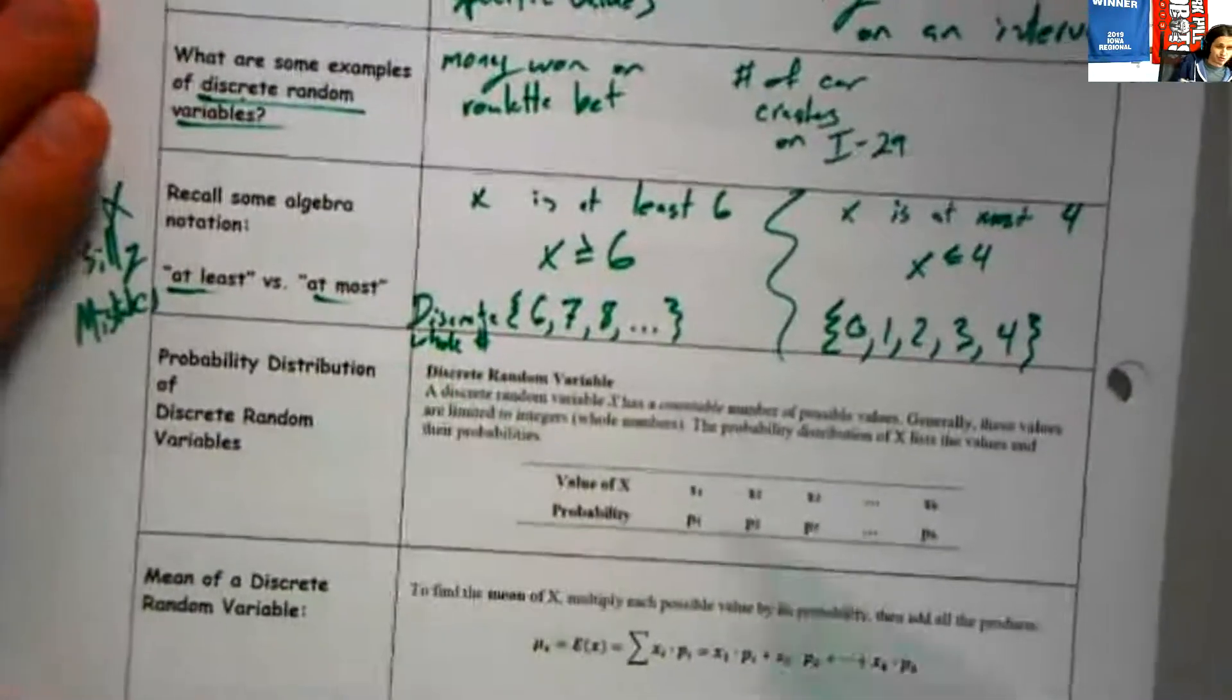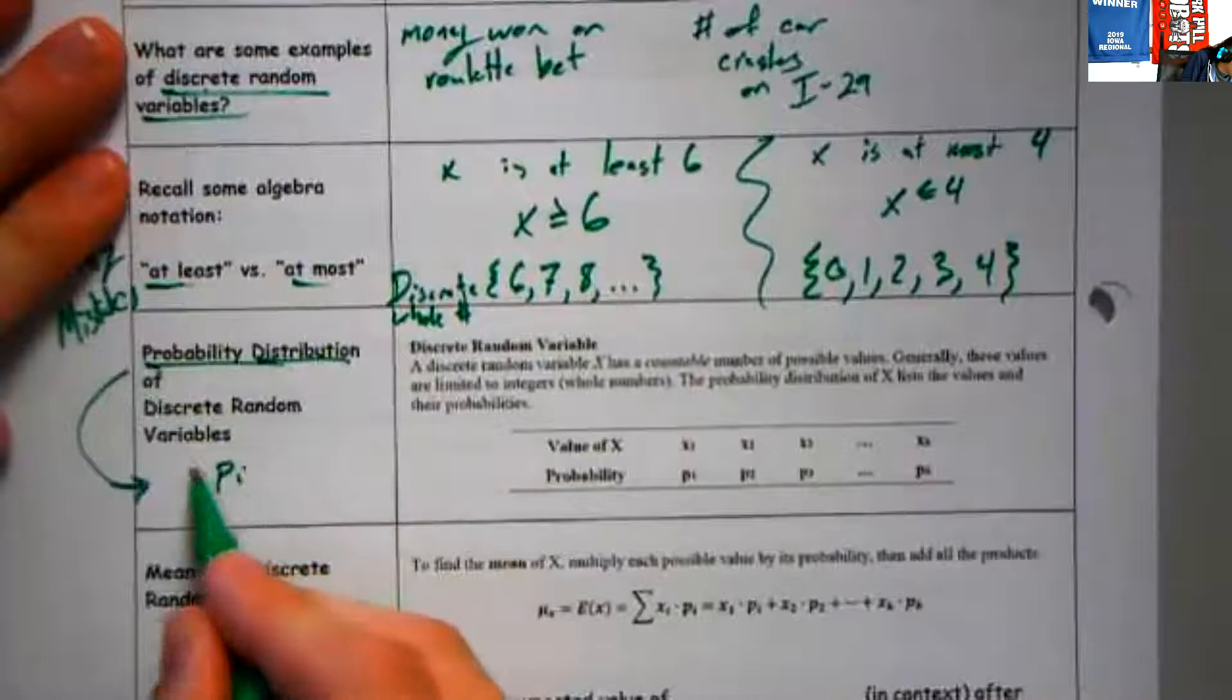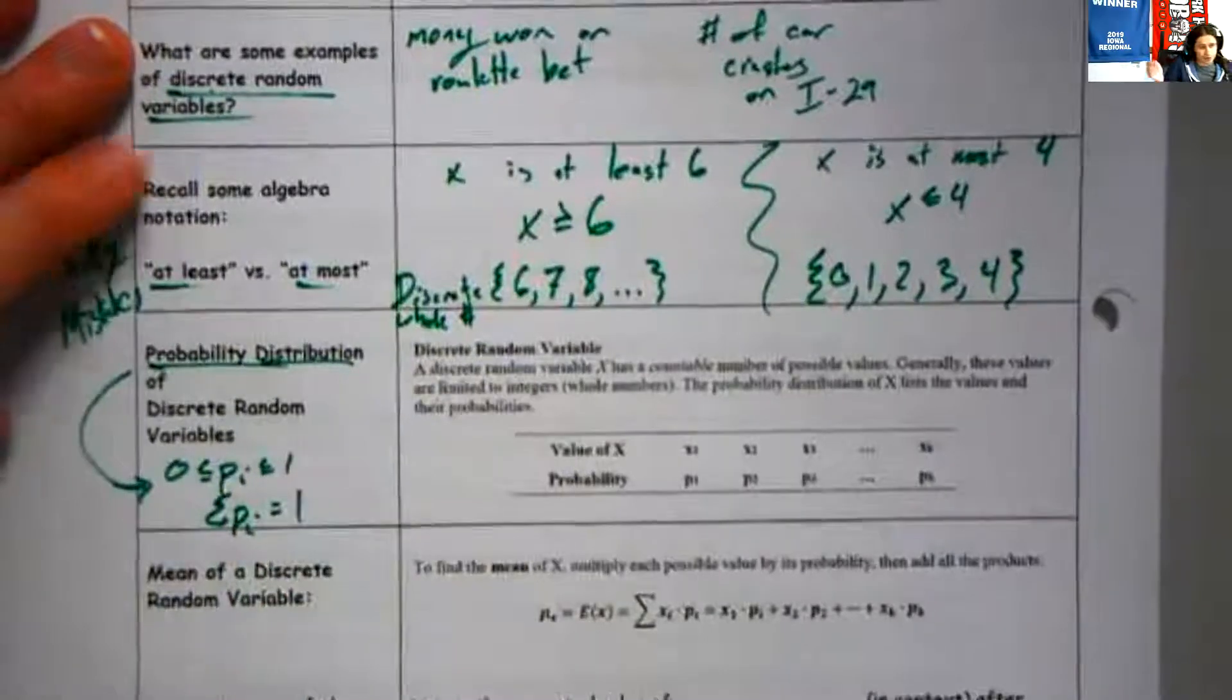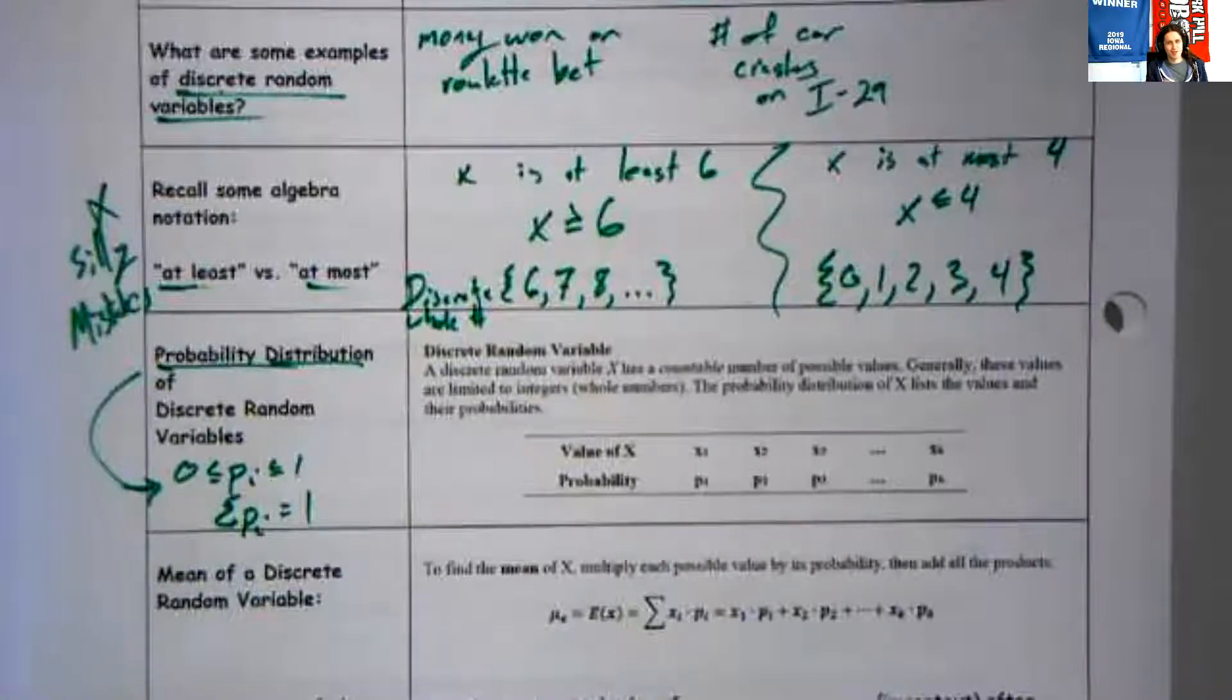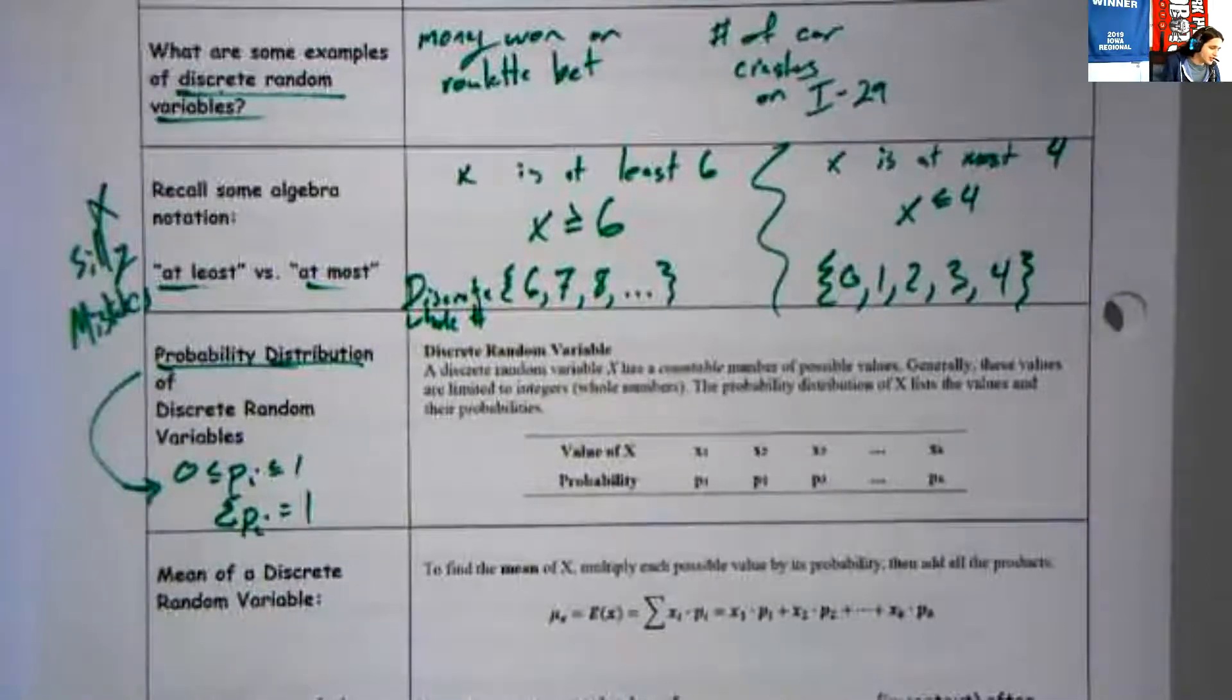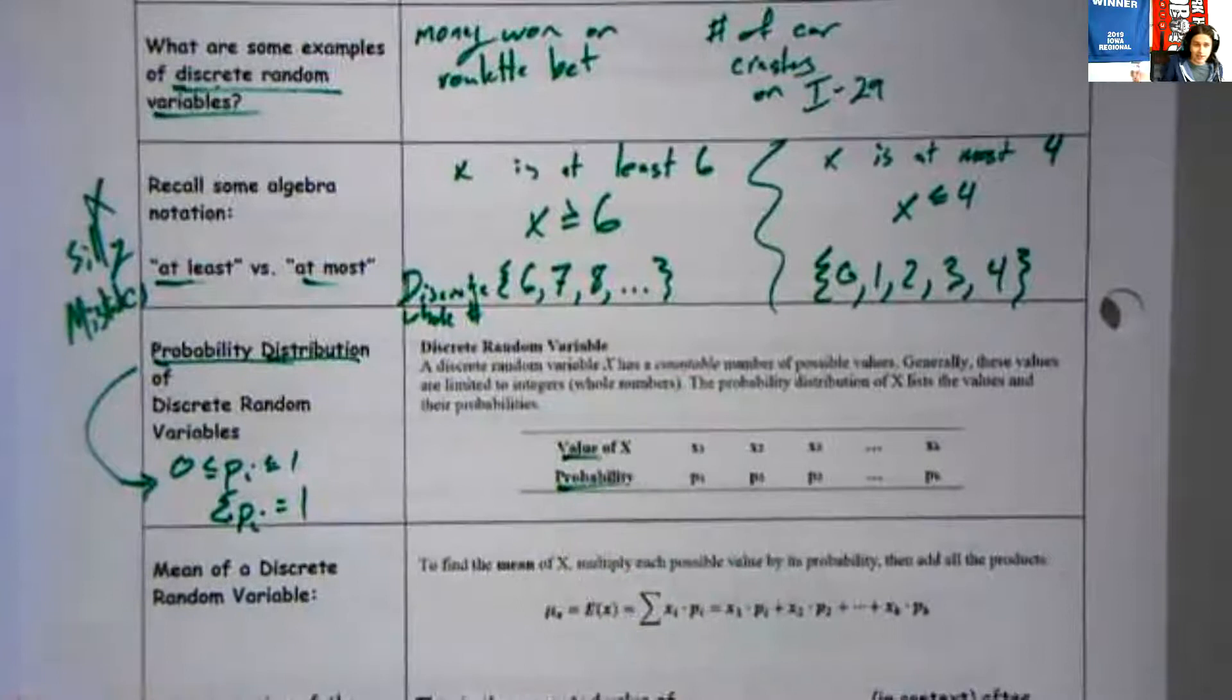We've got here a probability distribution. A few rules about probability distributions you might remember is that all the individual probabilities are between zero and one and the sum of those probabilities is one. You need two things for this discrete random variable: the values it takes and the probabilities it takes those values.